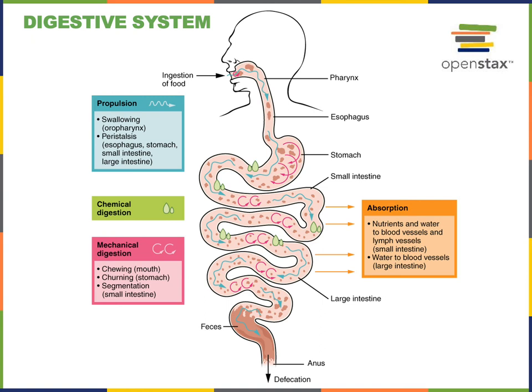In the small intestine, there's a pattern of mechanical activity known as segmentation, which is a form of mechanical digestion that helps to mix the mucus and enzymes inside of the small intestine with the contents. Chemical digestion refers to the breaking of chemical bonds within large molecules to release smaller nutrient molecules. Absorption is a major function of the digestive system referring to the movement of nutrients from the lumen of the digestive tract through the wall of the alimentary canal into the blood.